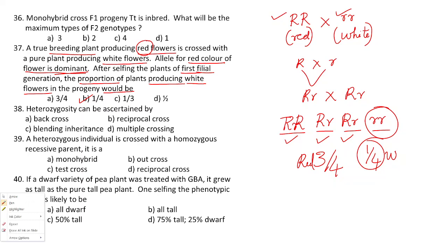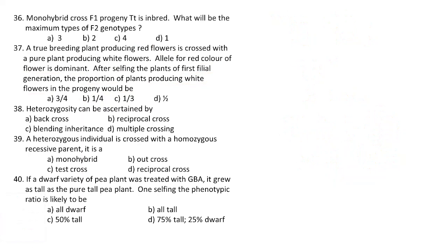Question 38: heterozygosity can be ascertained by which of the following? Homozygosity can be attained by continuous self-breeding, but heterozygosity can be ascertained by means of reciprocal cross. The answer is option B, reciprocal cross.